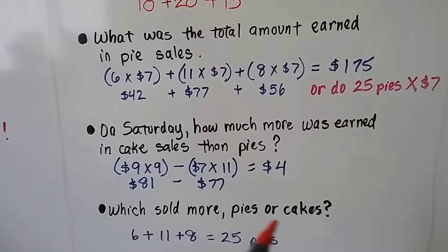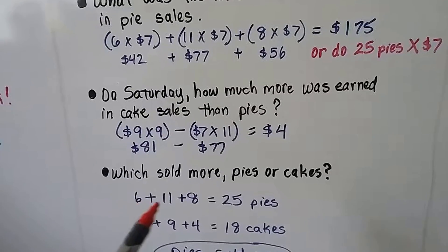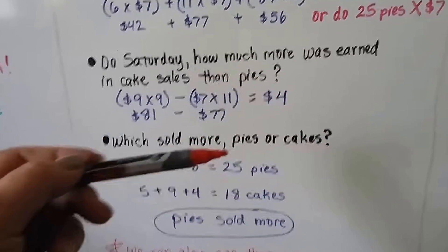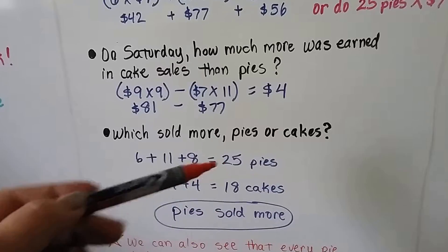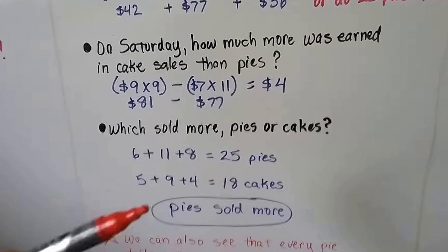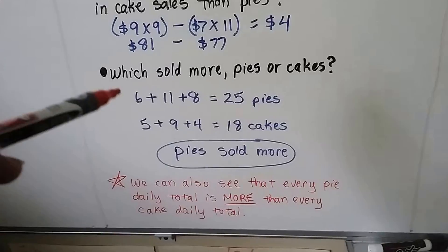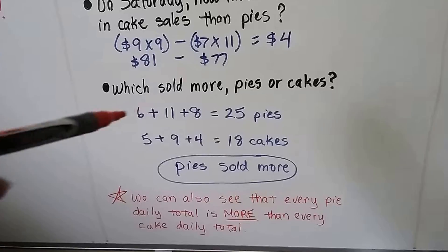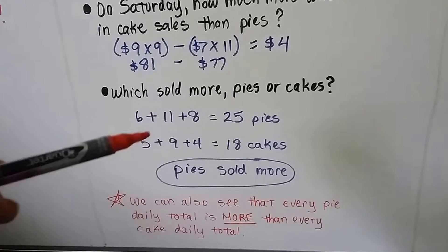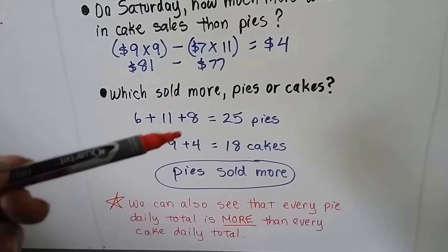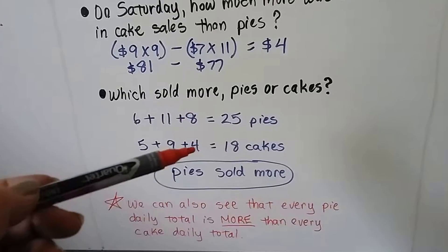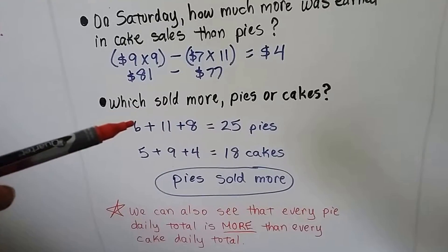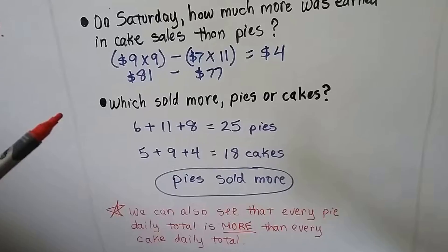Which sold more, pies or cakes? We take the amount of pies sold and the amount of cakes sold, separate totals, separate sums, and we compare them. Which one sold more? The pies. We can also see that for every daily total, there were more pies than cakes. On Friday, there were 6 pies, but only 5 cakes. On Saturday, there were 11 pies, but only 9 cakes. On Sunday, there were 8 pies, but only 4 cakes. See how every single day, the pies were winning with more sales?